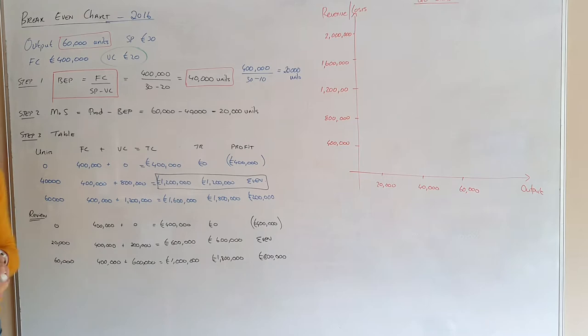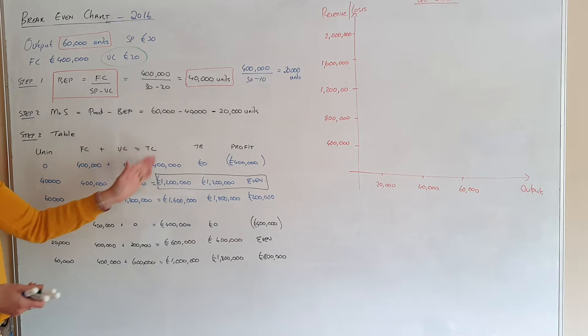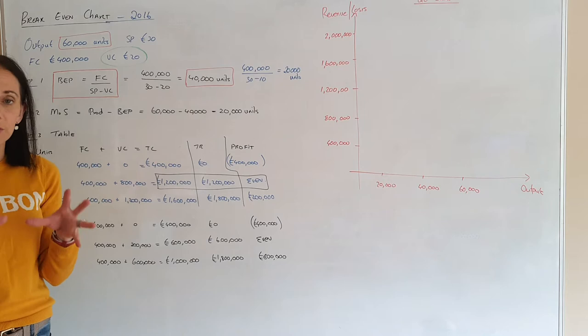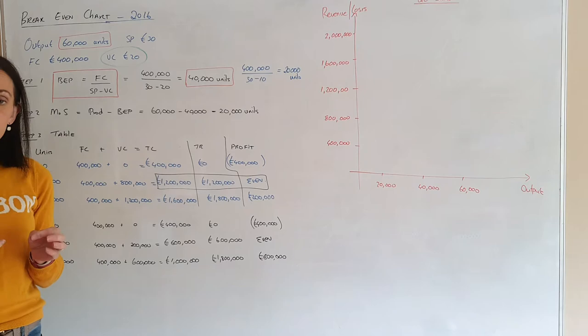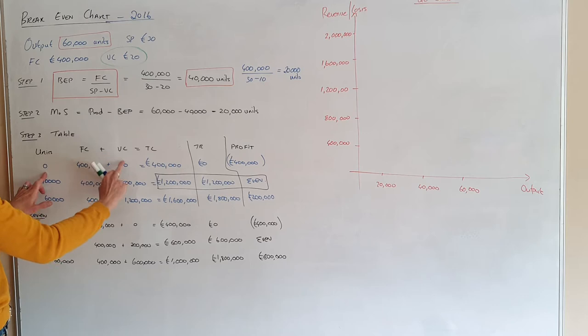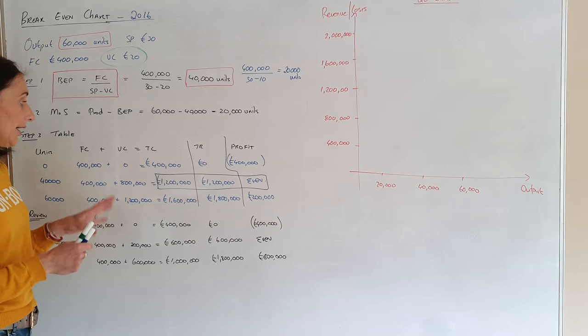Now for your table: make sure you have units. How do you know what units to use? You always use zero, the break-even point, and the current level of production — so zero, 40,000 and 60,000. Calculate your total cost, which is made up of two things: your fixed cost which will always be £400,000, plus your variable cost which varies depending on output. The variable cost is £20 per unit, so: 20×0=0, 20×40,000=£800,000, and 20×60,000=£1.2 million.